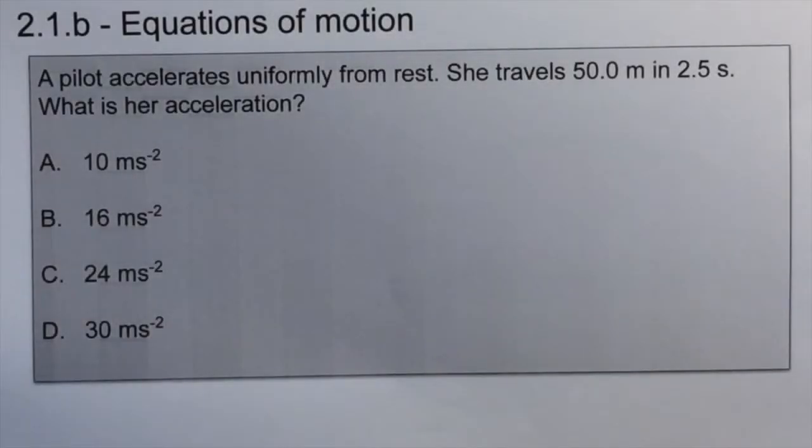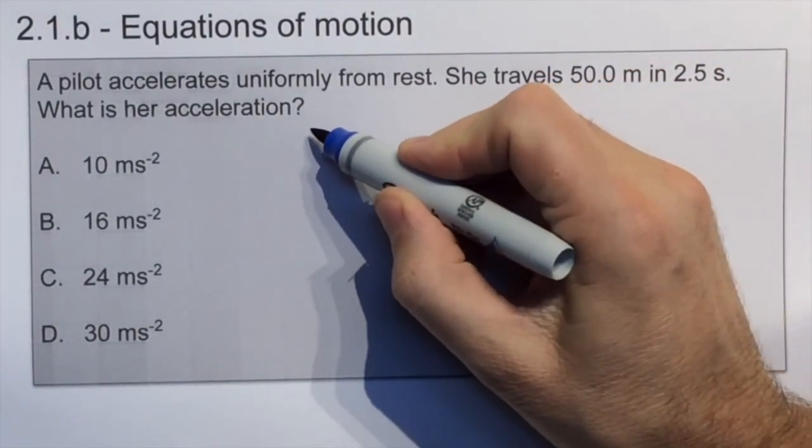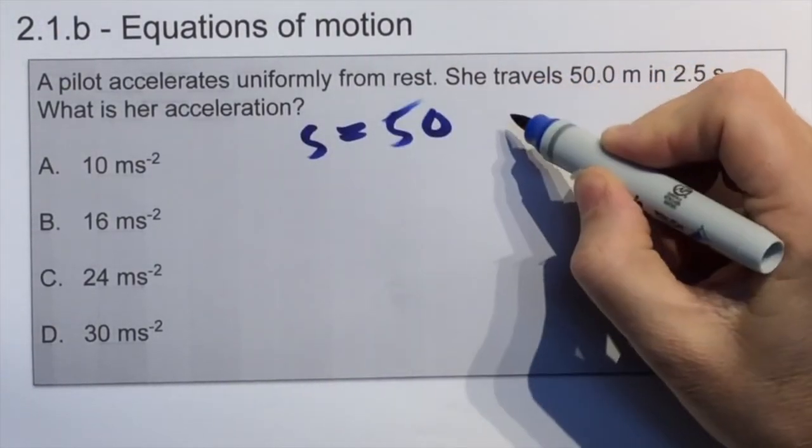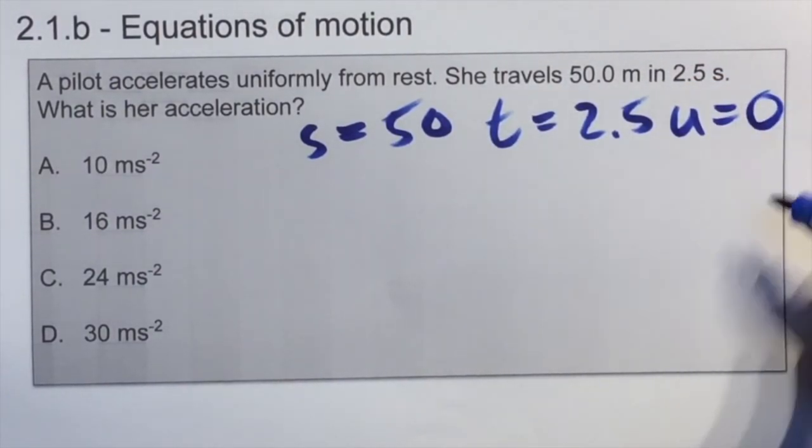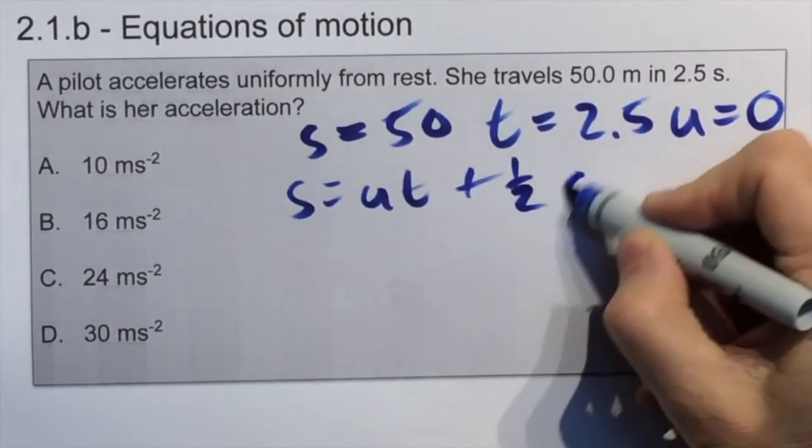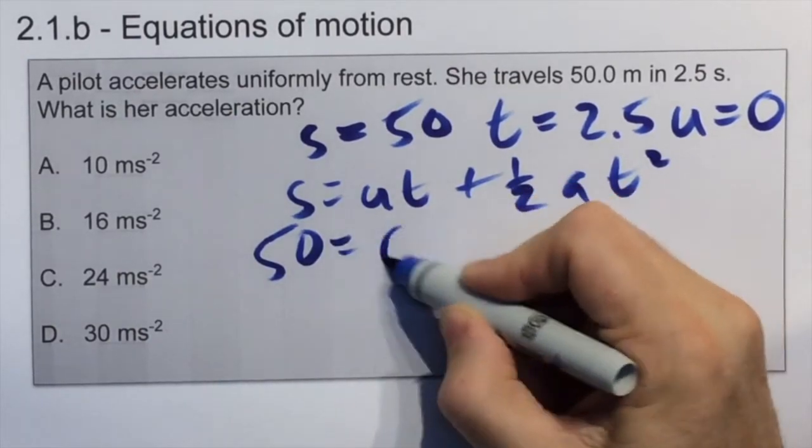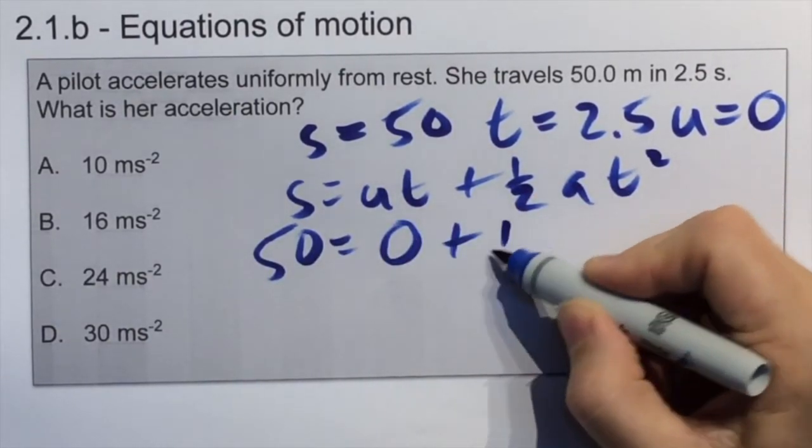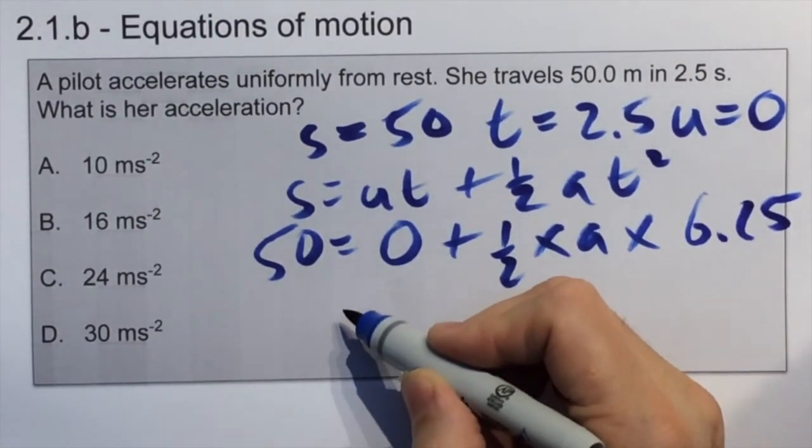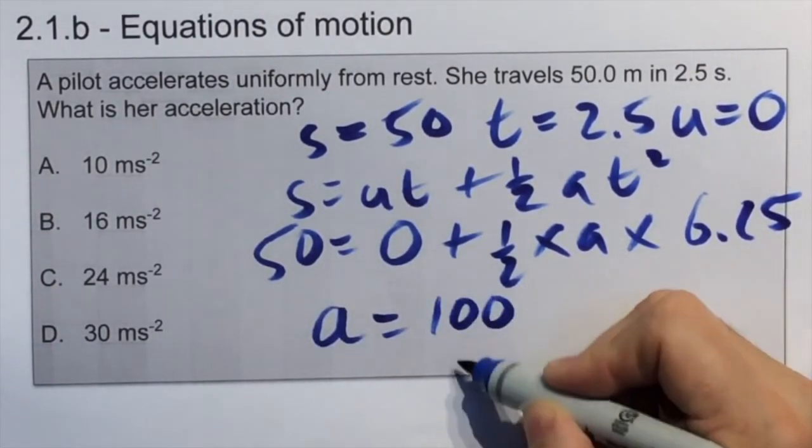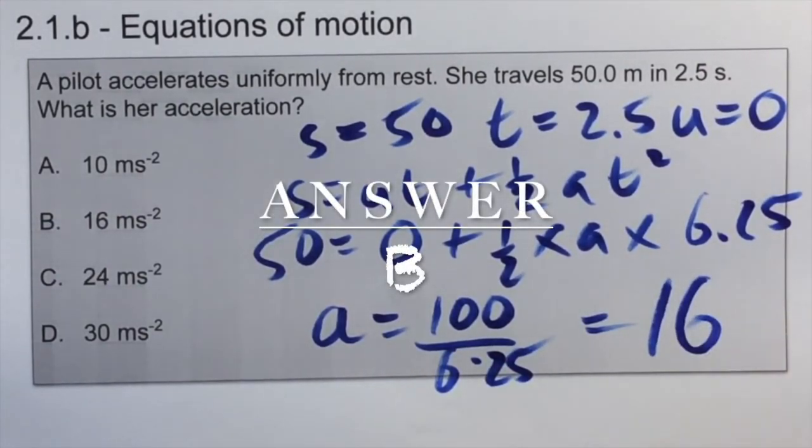For this question, we have to decide which formula to use, so that we know we have the quantities S and T and U, and we want to find A, and therefore S equals UT plus a half AT squared is the formula we're going to use. We substitute into that the numbers that we know, we rearrange it, and that will give us this calculation here, 100 divided by 6.25, and the answer is 16 meters per second squared.